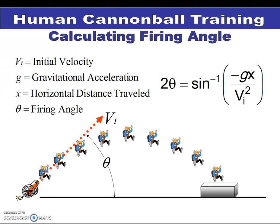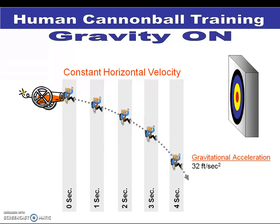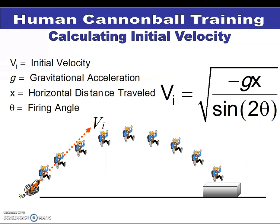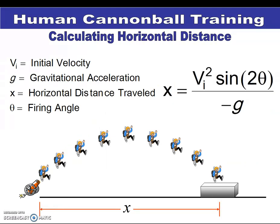If you want to know what the angle is, you're just rearranging the same equation: two times the angle equals the inverse sine of g times your range divided by v squared. Those are your calculations — that's all you need to know for this unit: those three equations. So write those down, and we will then go have you do some fun shooting of cannons in the classroom. If you have any questions, please ask your teacher.